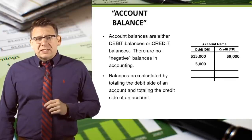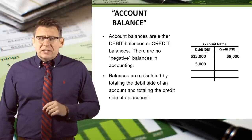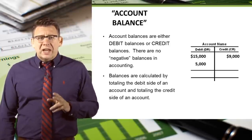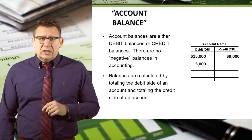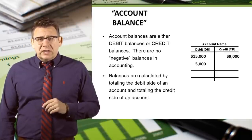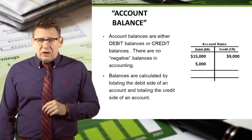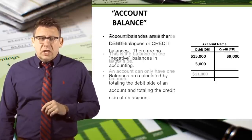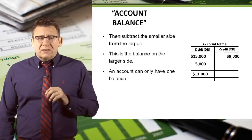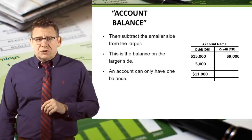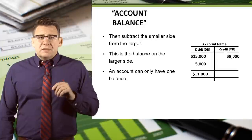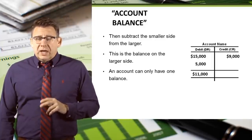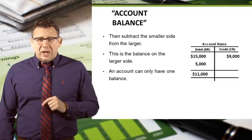Account balances are either debit balances or credit balances. There are no negative balances in accounting. Balances are calculated by totaling the debit side of an account and totaling the credit side of the account, then subtracting the smaller side from the larger. This is the balance on the larger side. An account can only have one balance.